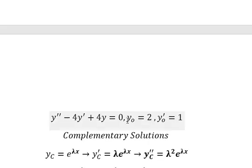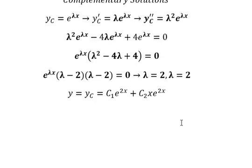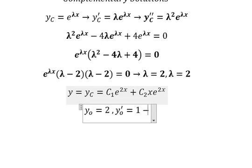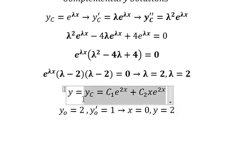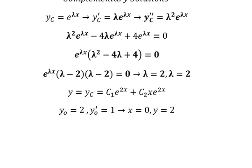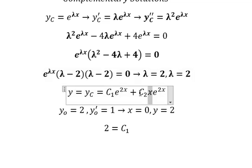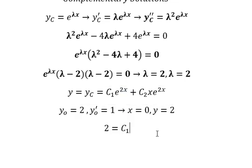Now we apply the initial conditions. When x equals zero, y equals two. So we substitute zero in here, and we get two equals c1, because e to the power of zero is one and zero times anything is zero. So c1 equals two.